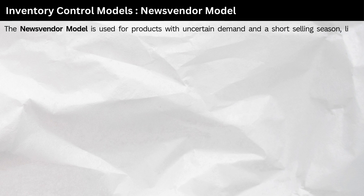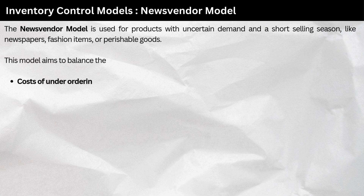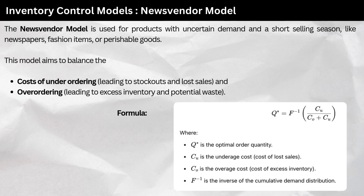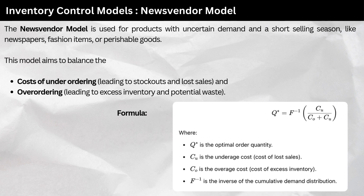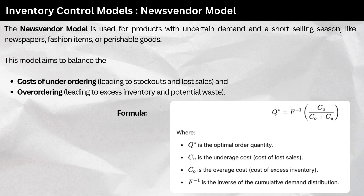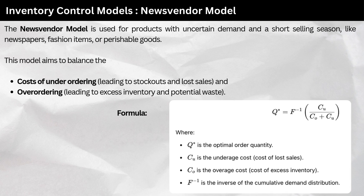2. News Vendor model. The news vendor model is used for products with uncertain demand and a short selling season, like newspapers, fashion items, or perishable goods. This model aims to balance the costs of under-ordering, leading to stockouts and lost sales, and over-ordering, leading to excess inventory and potential waste. The formula finds Q* (optimal order quantity), where Cu is the underage cost (cost of lost sales), Co is the overage cost (cost of excess inventory), and F^-1 is the inverse of the cumulative demand distribution.